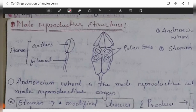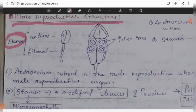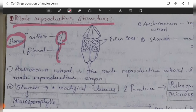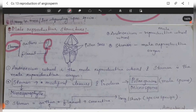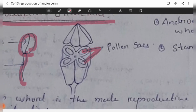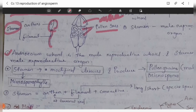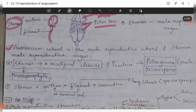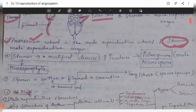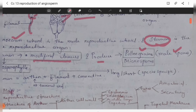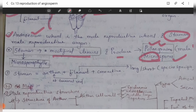The male reproductive structure is the stamen, which consists of three parts: the anther, filament, and a connective joining both. The anther shows pollen sacs inside. The androecium whorl is the male reproductive whorl and the stamen is its unit. Stamen is a modified leaf — likewise, a flower is a modified shoot. Stamens produce pollen grains, which are the male spores or microspores. Since stamen contains male spores, it is called a microsporophyll.